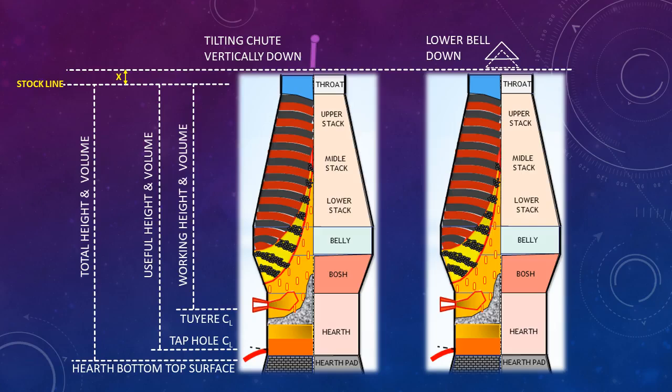How to define stock line? In a bell charging system, when the lower bell is in a lowered condition, the stock line is considered an additional x value downward, as shown in the figure. The value of x depends upon the size of the furnace.